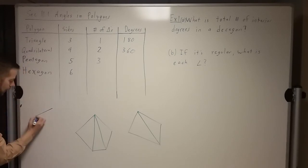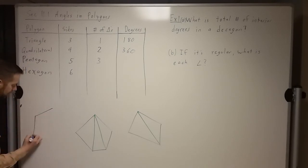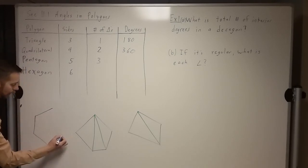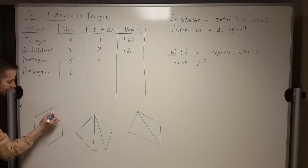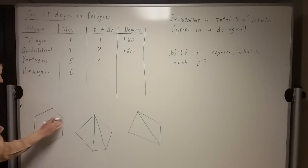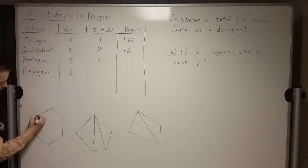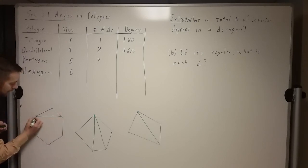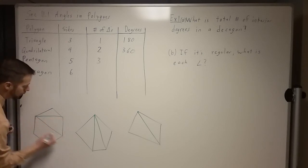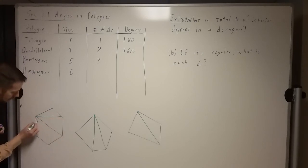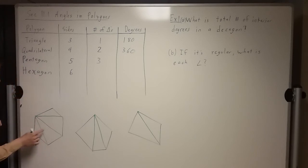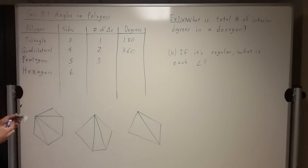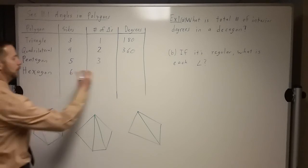Just to draw to make sure — one, two, three, four, five, six sides — so there's a hexagon. If I put in all the diagonals I could make from one vertex, going from this one here, I can do one there, one there, one there. That creates one, two, three, four triangles. So a hexagon would have four triangles.